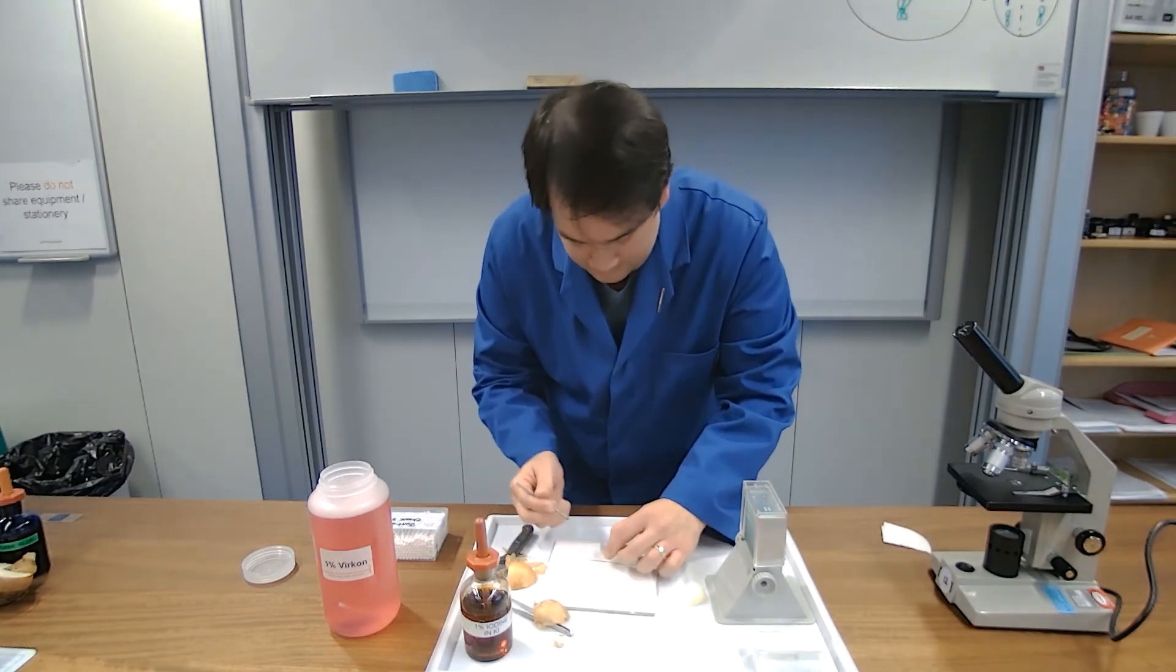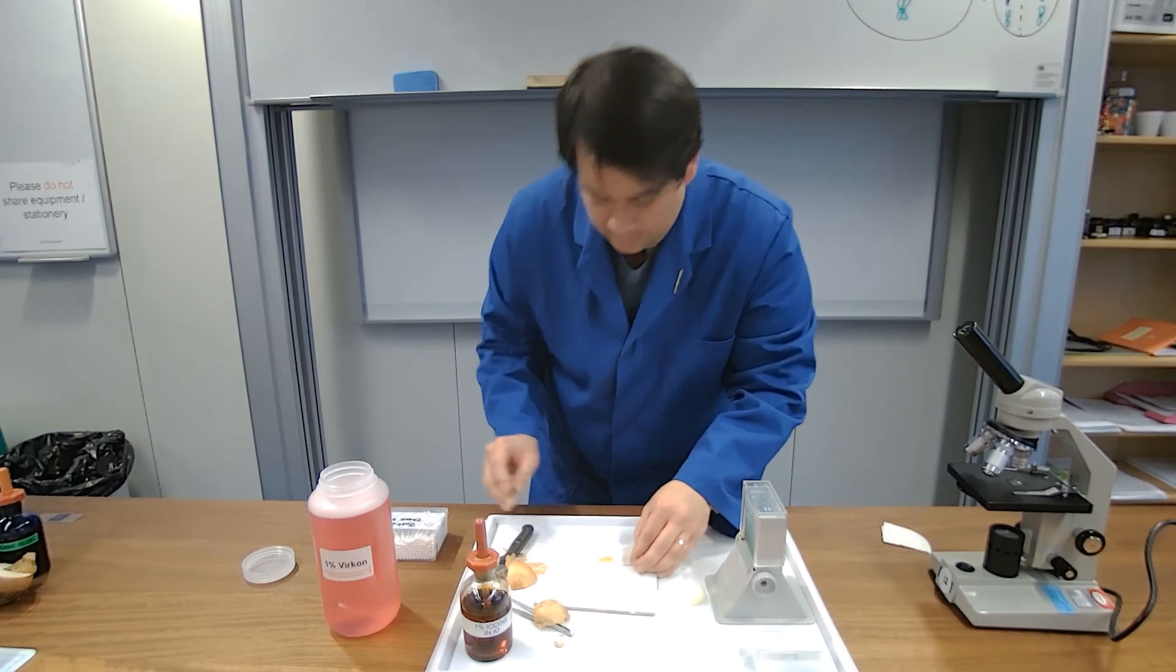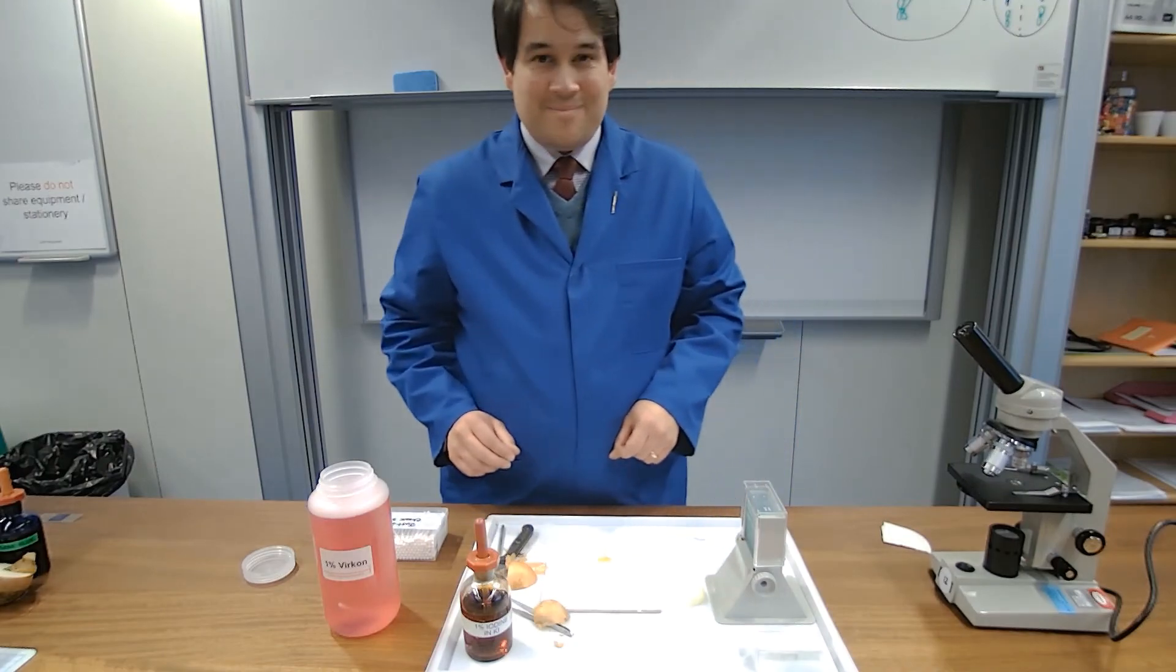We're going to drop the iodine onto it. Cover slip on again. Same technique. We approach the bubble. We lower it. So we have a nice layer.